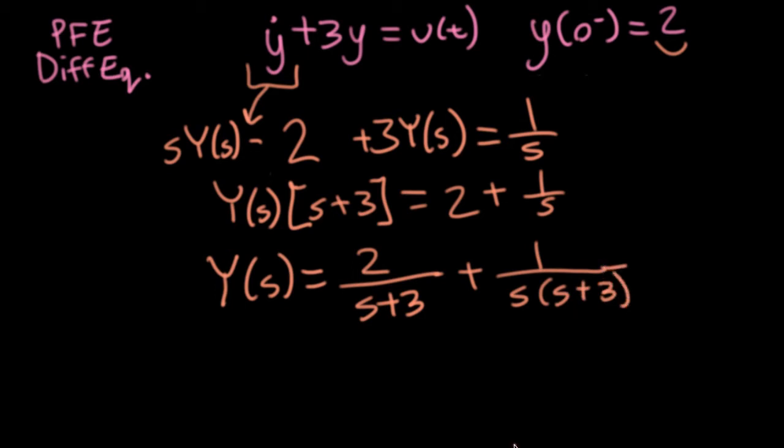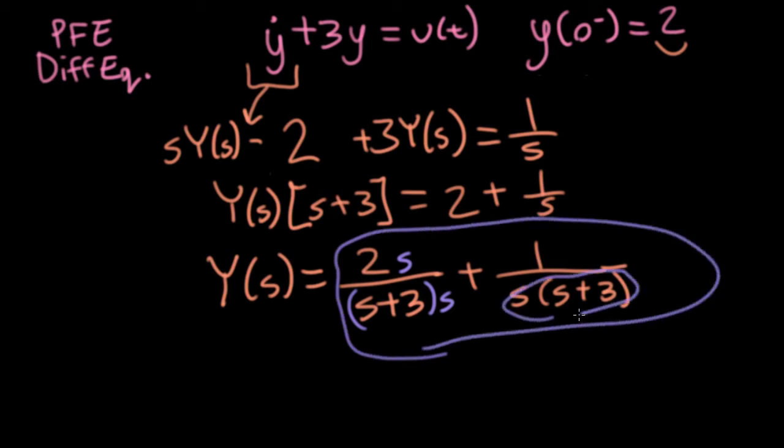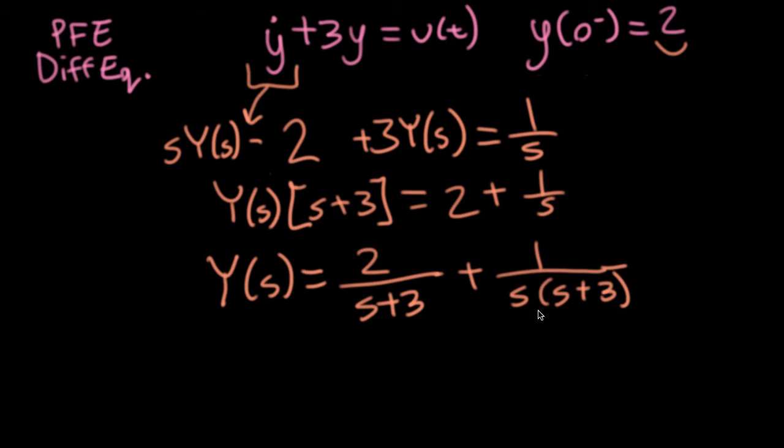And at this point, I could take a couple of approaches. I could put an s here and an s down here and put everything over a common denominator and then work the rest of the problem. But there's a particular point that I want to make in this lecture that will benefit from me keeping these terms separate. So what I'm going to do here is I'll just copy this first term and write 2 over s plus 3. And for the second term, I'll write this in terms of a partial fraction expansion.